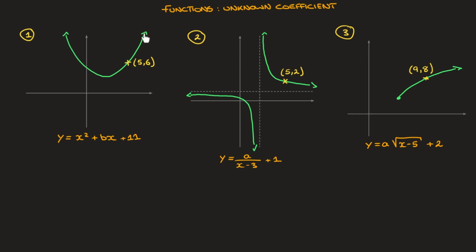For this first curve we can see that it has an equation y equals x squared plus bx plus 11, and we need to find the unknown coefficient b. All we need to find b are the coordinates of a point through which the curve passes, which is exactly what we're given here. We're told that this curve passes through the point with coordinates (5, 6).